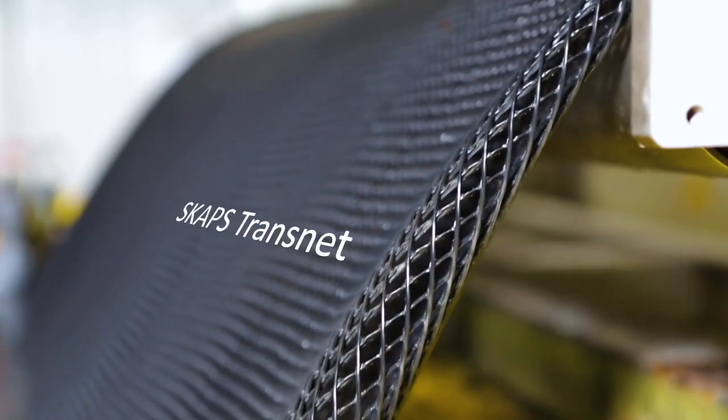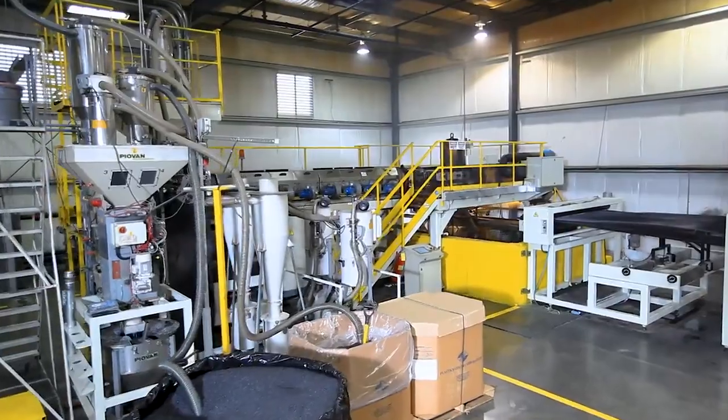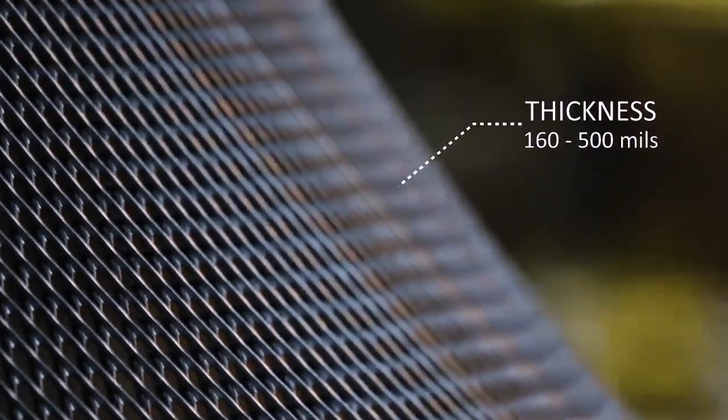SCAPS Transnet, a biplanar geonet, is made from virgin high-density polyethylene and is offered in thicknesses ranging from 160 to 500 mils.